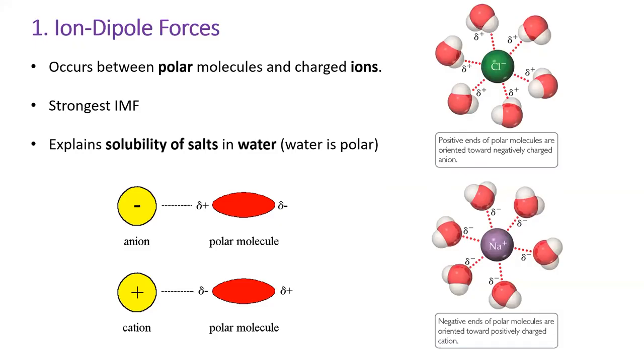The strongest IMF occurs between polar molecules and charged ions. This is how soluble salts dissolve in water. The electronegative ends of the water molecule, that is, the oxygen ends, are attracted to the positive cations, while the positively charged hydrogens are attracted to the negative anions.